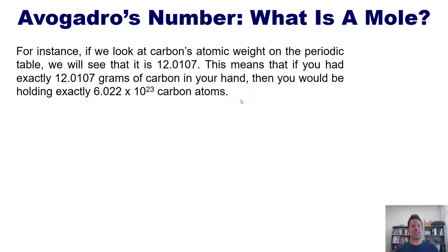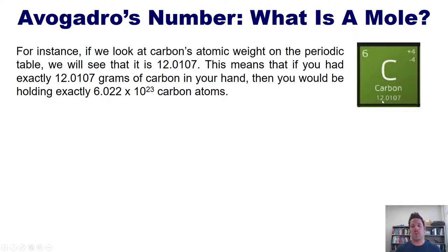As it turns out, a mole happens to be the exact number of atoms present in a sample that weighs that element's atomic weight. For example, if we look at carbon's atomic weight on the periodic table, it is 12.0107. This means that if you had exactly 12.0107 grams of carbon in your hand, you would be holding exactly 6.022 times 10 to the 23rd carbon atoms. So whatever the atomic mass is of an element, one mole of that element equals that many grams.